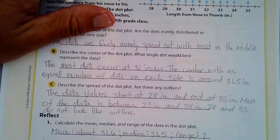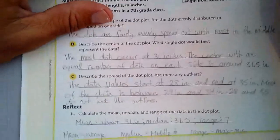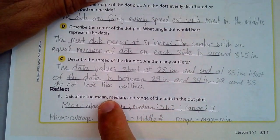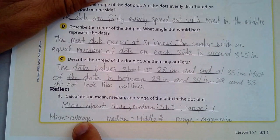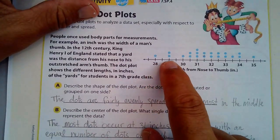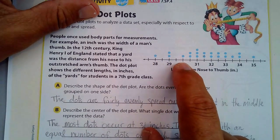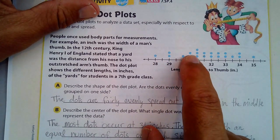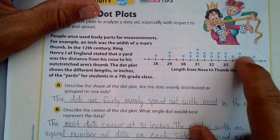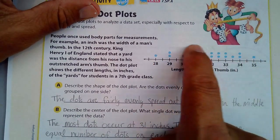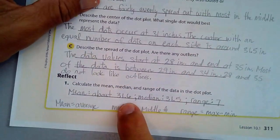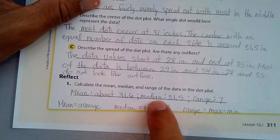Let's reflect on this. Calculate the mean, median, and range of the data of the dot plot. To calculate the mean, that is the average. You have to add all of these. You have to add 28 plus 29 plus 29 plus 30 plus 30.5 plus 30.5 plus 31 plus 31 plus 31, all of these data points. You have to add them up, and you have to divide by how many data points you have. And that would be the average. And I have that at 31.6.